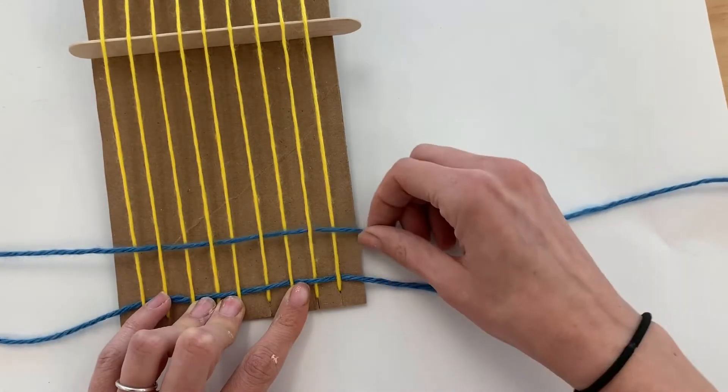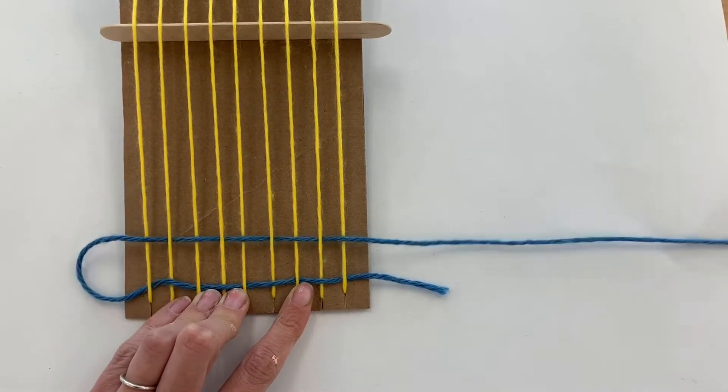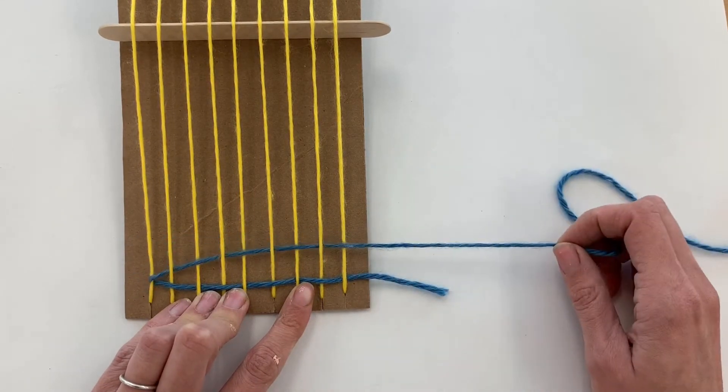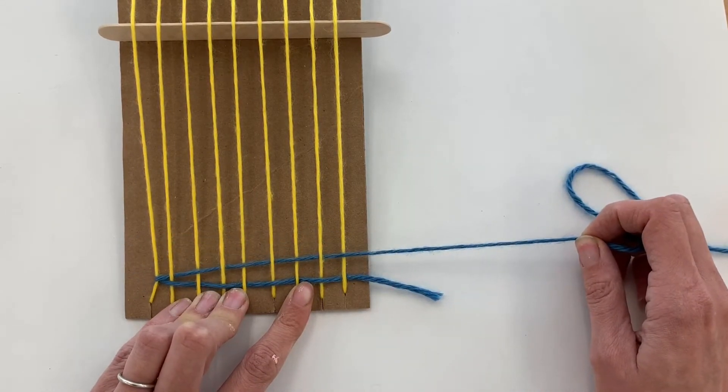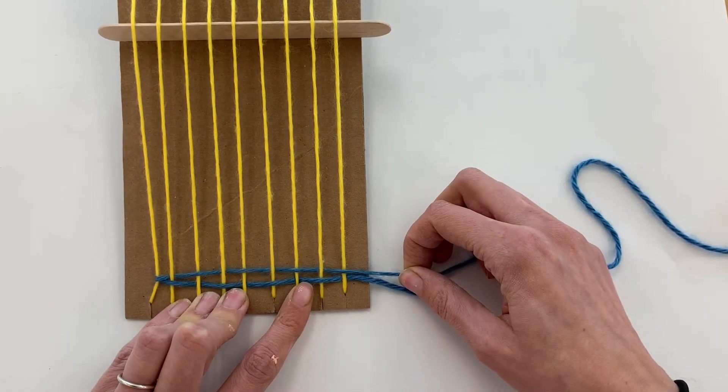Once I'm there, I'm going to pull all the way, and as I get towards the end, I slow down. I do not want to pull it too tight because if I pull it too tight, then my last warp string starts to come in like that, and we don't want that to happen.